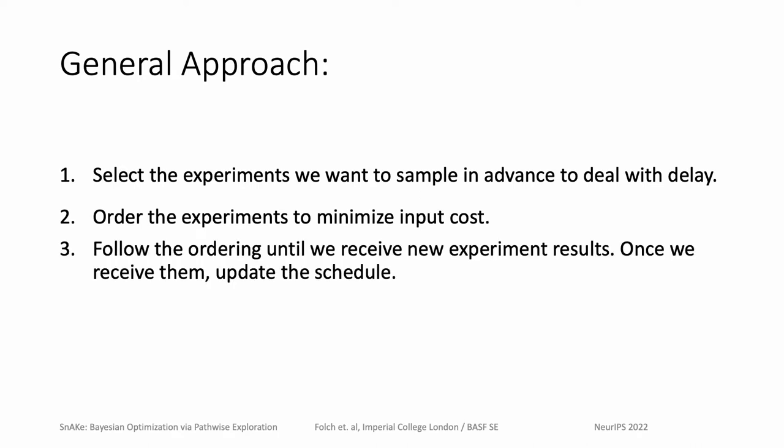We propose the following general approach to this problem. Step one is that we use batch methods to select all experiments we want to sample in advance. This helps us deal with any delays in observations returning. More importantly, we are also able to order the experiments in a way that minimizes the input costs. Finally, we can follow this path defined by the ordering. But when we receive new results, we seek to update the path.